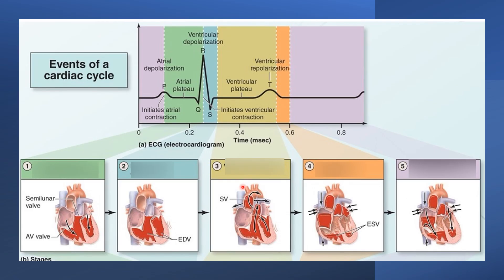If we look at the ECG and compare it with different phases of the cardiac cycle, the P wave denotes atrial depolarization. At this point of electrical activity, atrial contraction or atrial systole starts. During atrial depolarization, before atrial systole, the atrium acts as a conduit — it passively transfers blood from the atrium to the ventricle because the atrioventricular valves (mitral and tricuspid) are open. Passively, 80% of blood from the atrium enters the ventricle during atrial diastole.